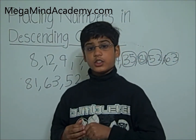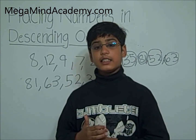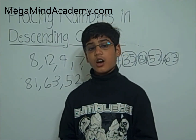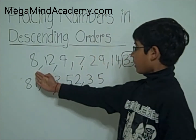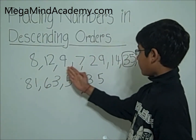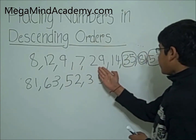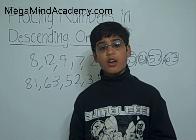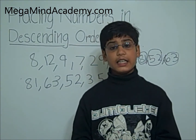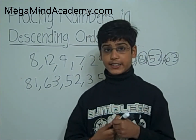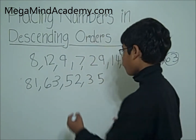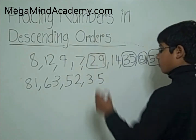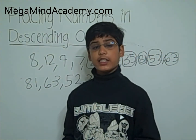Now is there any number closer to 35? Is there any number from 20 to 30? Our numbers are 8, 12, 9, 7, 29, and 14. Yes! There is a number from 20 to 30. It is 29. So we are going to place 29 next.